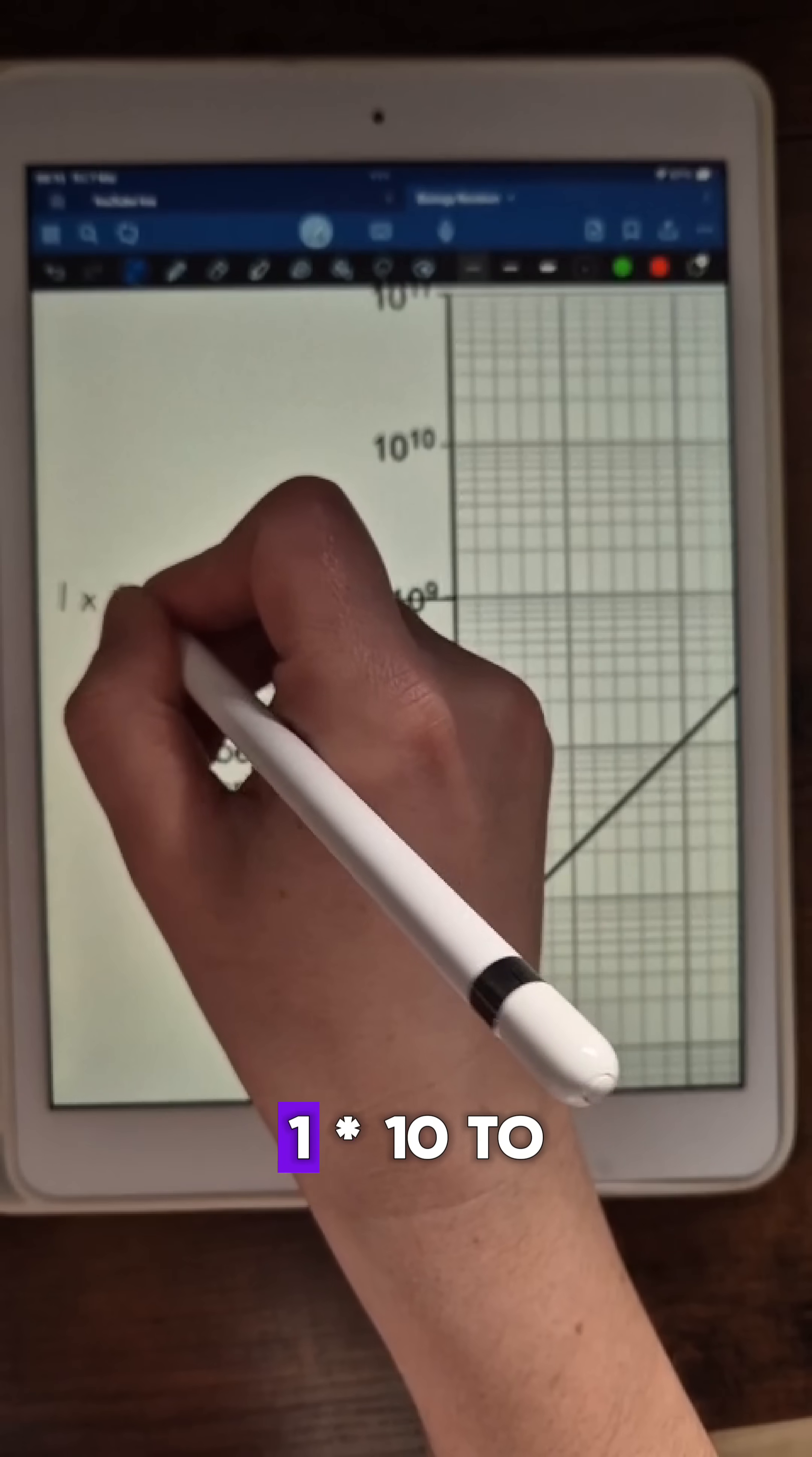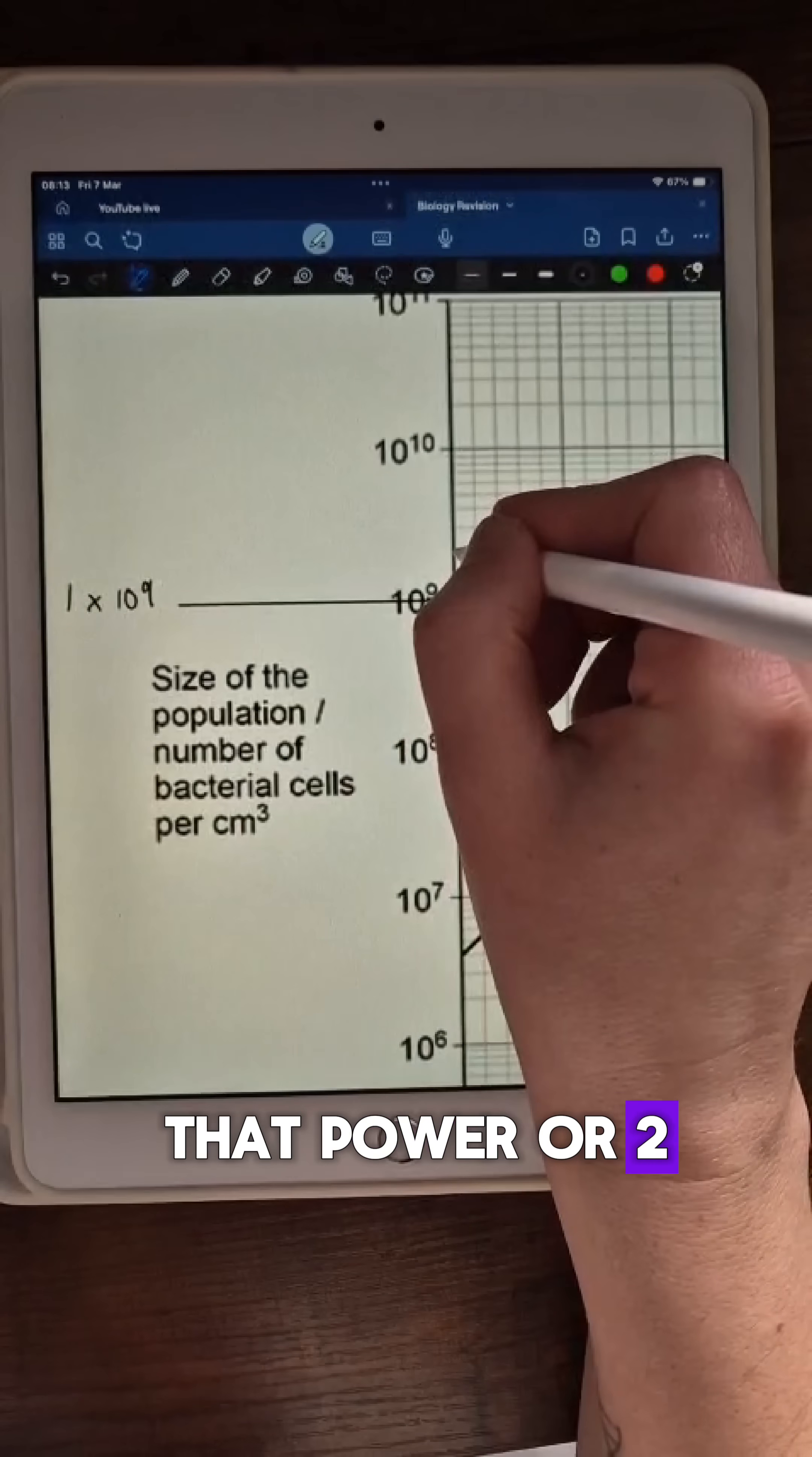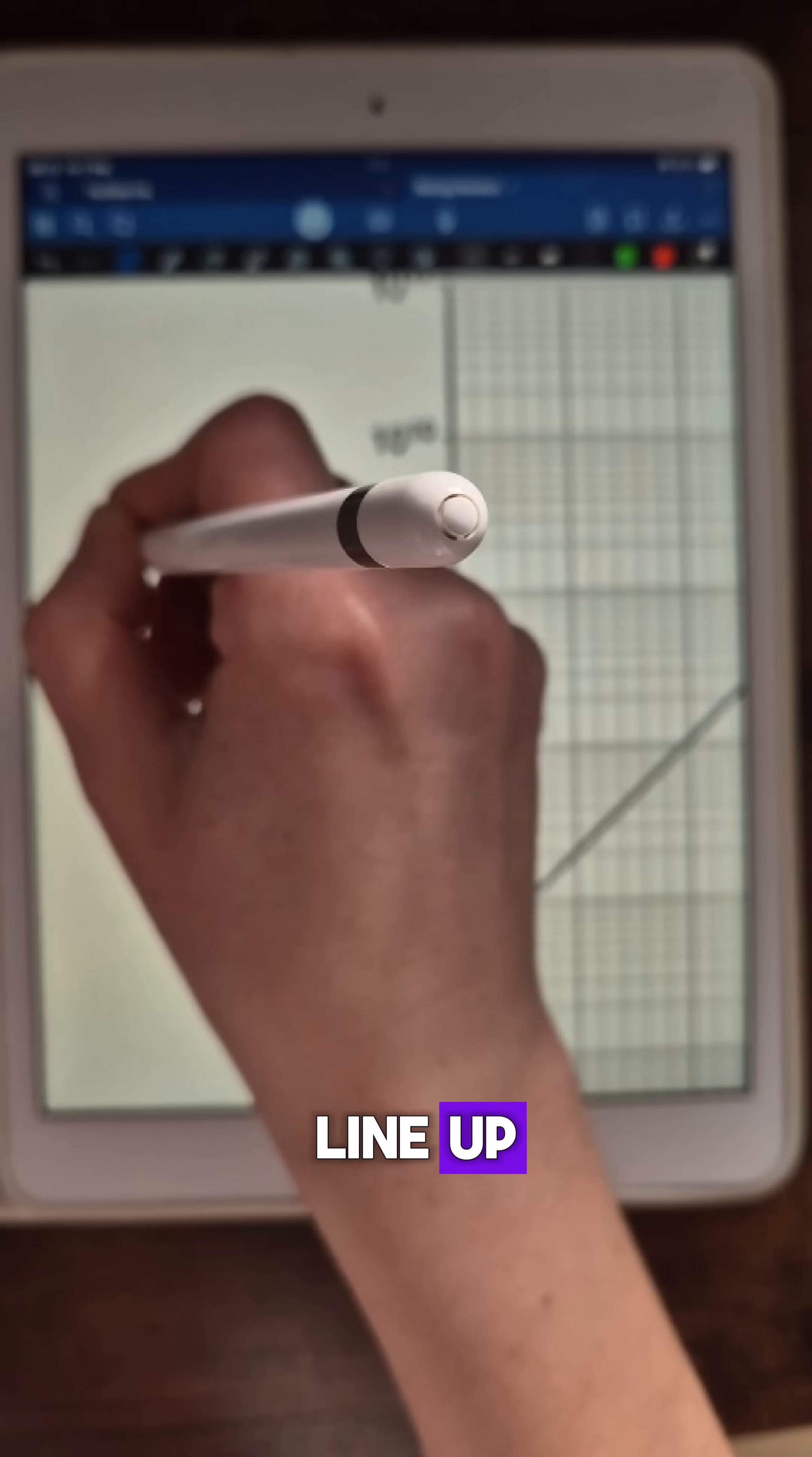Each line is representing 1 times 10 to that power or 2 times 10 to that power if it's the second line up.